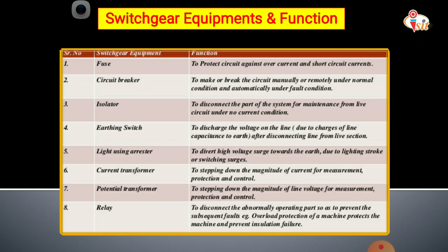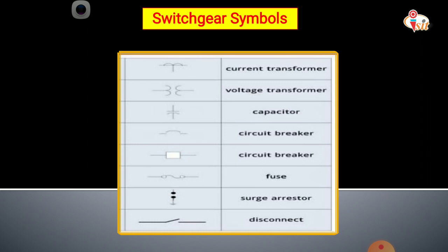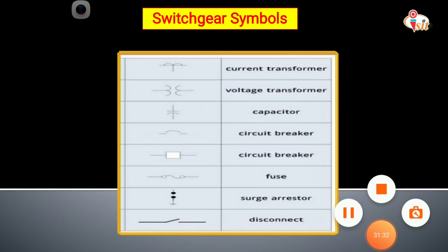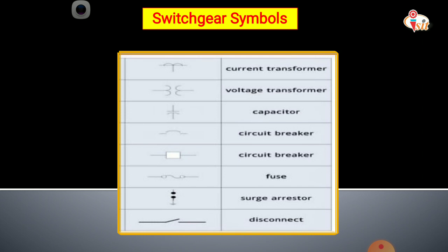Next we see the symbols of some switchgear equipments — current transformer, voltage transformer, capacitor, circuit breaker, fuse, surge arrester, and disconnector (isolator). These are the switchgear equipments and their symbols. In this lecture we studied various faults, their functions, and the various switchgear equipment functions. In the next lecture, we will study current limiting reactors and their location. Thank you.